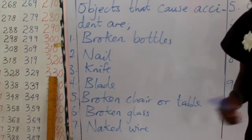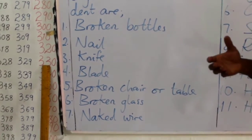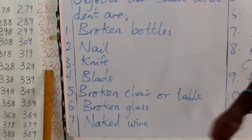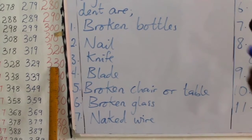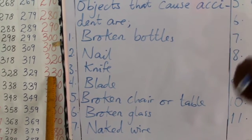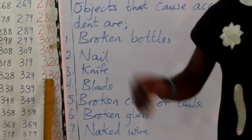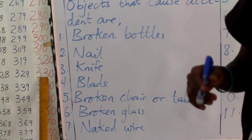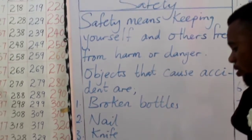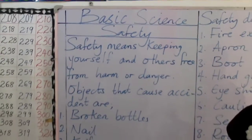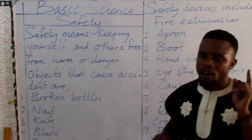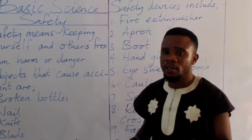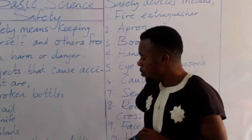The sixth one is broken glass — like a glass cup or anything made of glass. When it falls on the floor, carefully pack it out. There are tiny pieces you might not see, so you have to be careful while sweeping. Don't go barefoot — put on your slippers, carefully pack the pieces out, and dispose of them away from the reach of your younger ones.